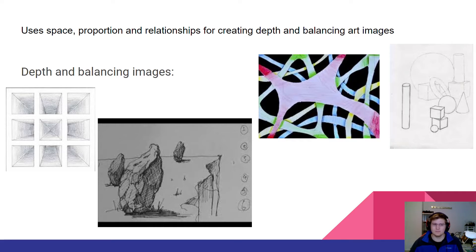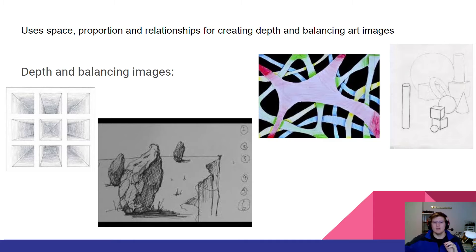I have a few examples here. One is a simple optical illusion — on the left of your screen you'll see those squares going into a midpoint, kind of showing depth, like there are square wells. We also have the one with the rocks, showing depth as well: a rock in the background, a rock in the foreground, and one in the midground, plus a cliff — showing depth in an image.